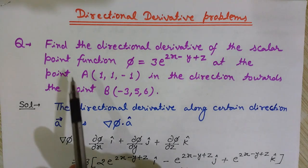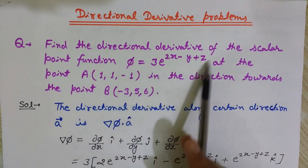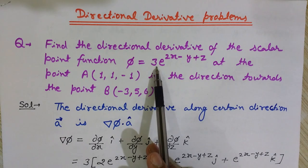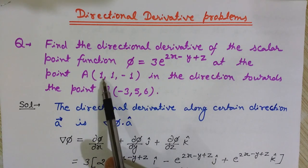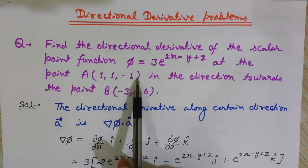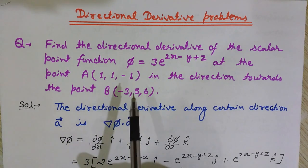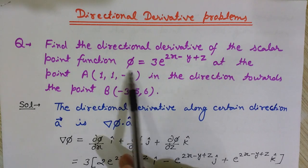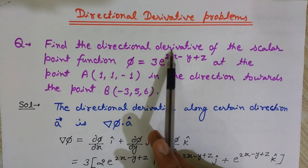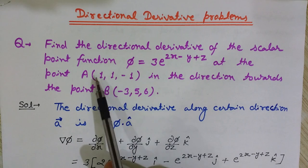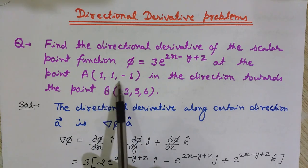So let's see today's problem. We need to find the directional derivative of the scalar point function φ, which is given as 3e^(2x - y + z), at the point A with coordinates (1, 1, -1), in the direction towards the point B(-3, 5, 6). So we want the directional derivative at point A along the vector AB.